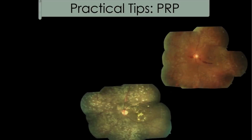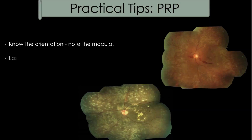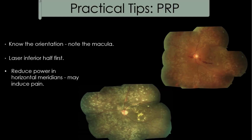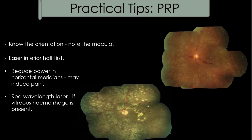Some practical tips for PRP: before starting, note the macula first to orient yourself. In patients prone to vitreous hemorrhage, start with the inferior retina, because any hemorrhage will collect below and preclude lasering the inferior half. Horizontal meridians contain the ciliary nerves, so lasering in those areas may be painful — reduce the power and do it towards the end of the session. In areas with dense vitreous hemorrhage, you may need to increase the power, or alternatively use a red wavelength laser.